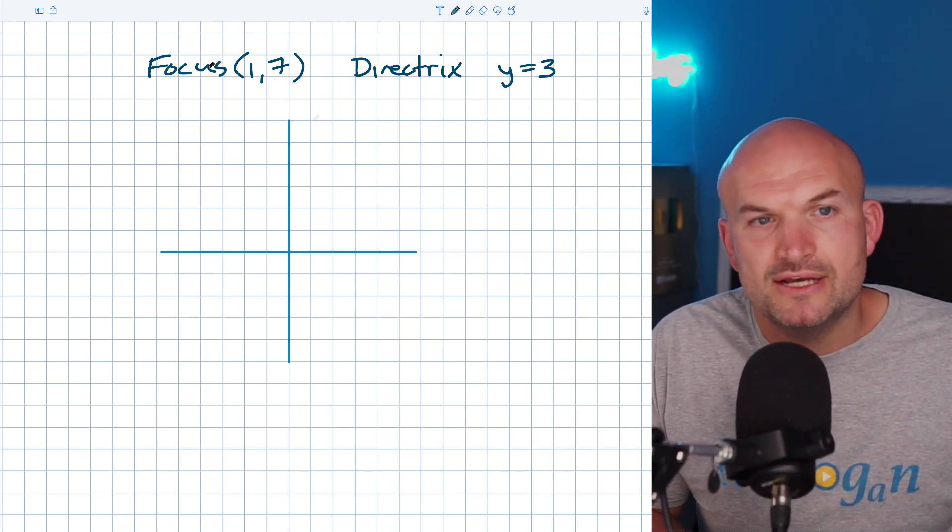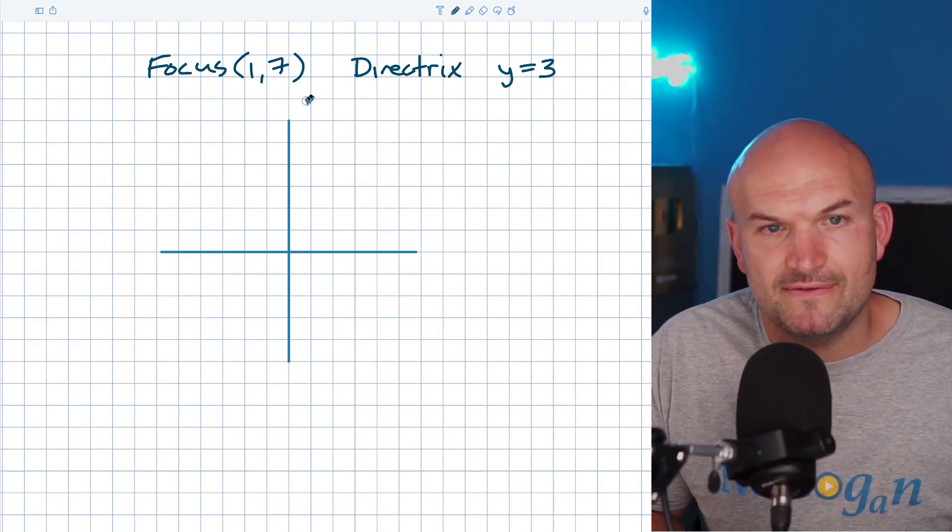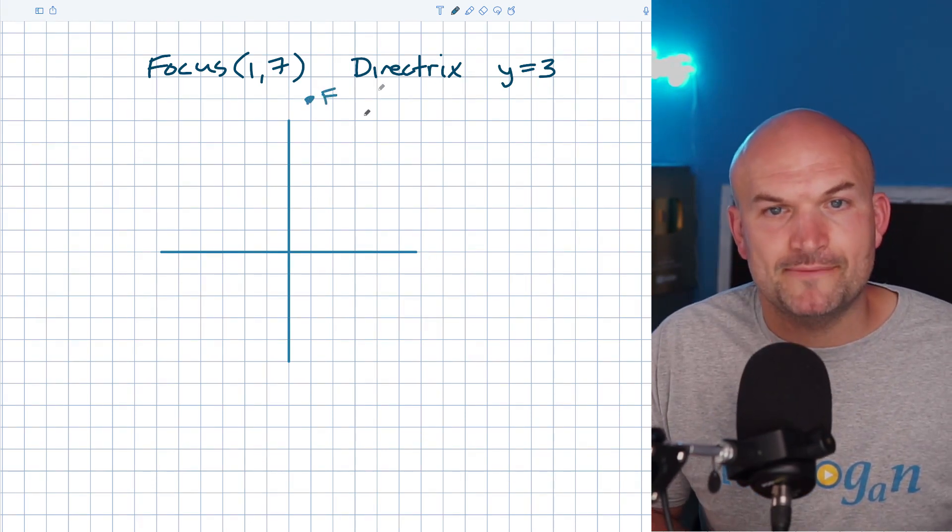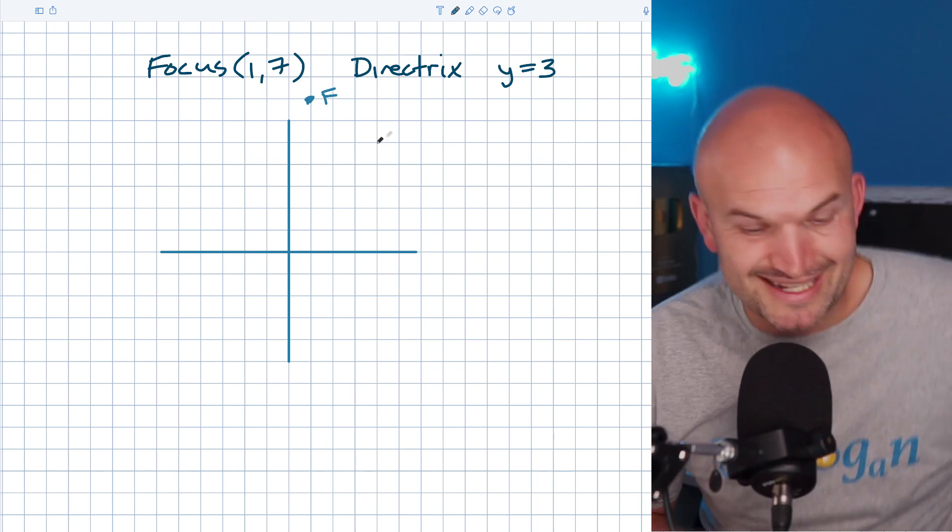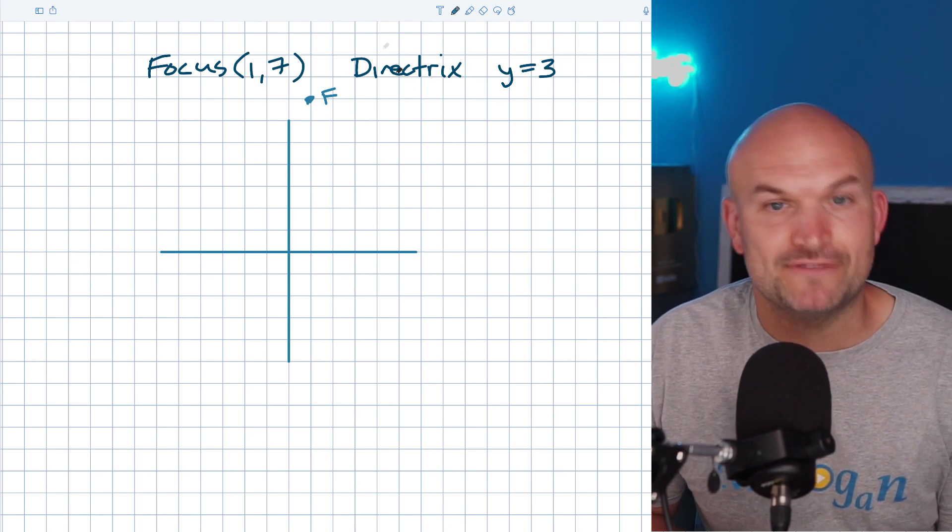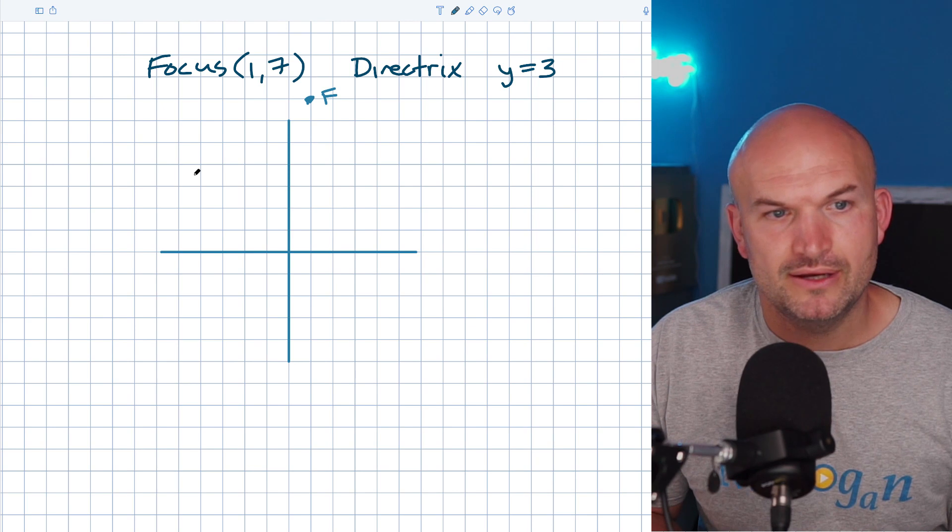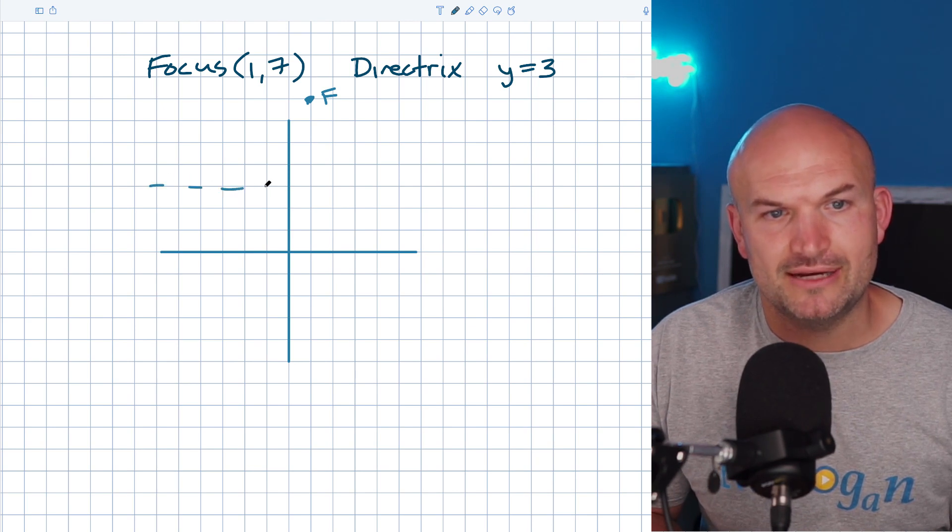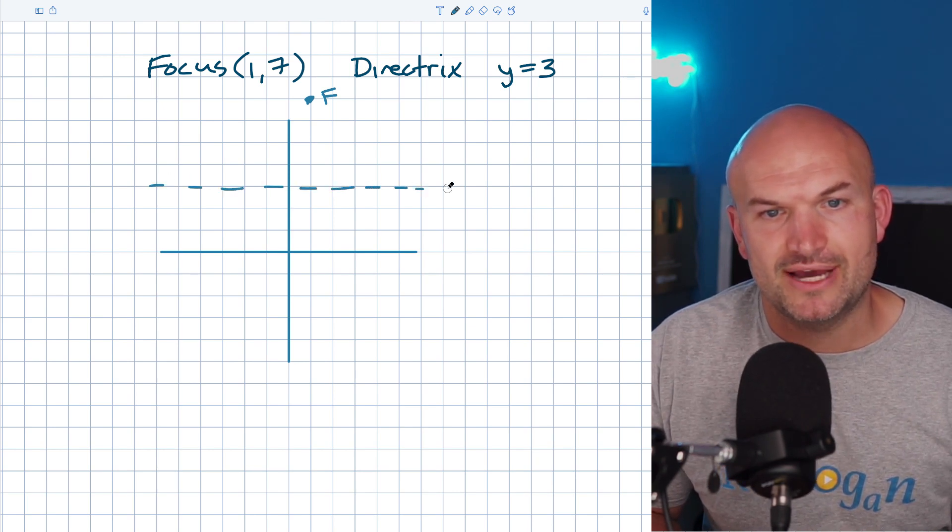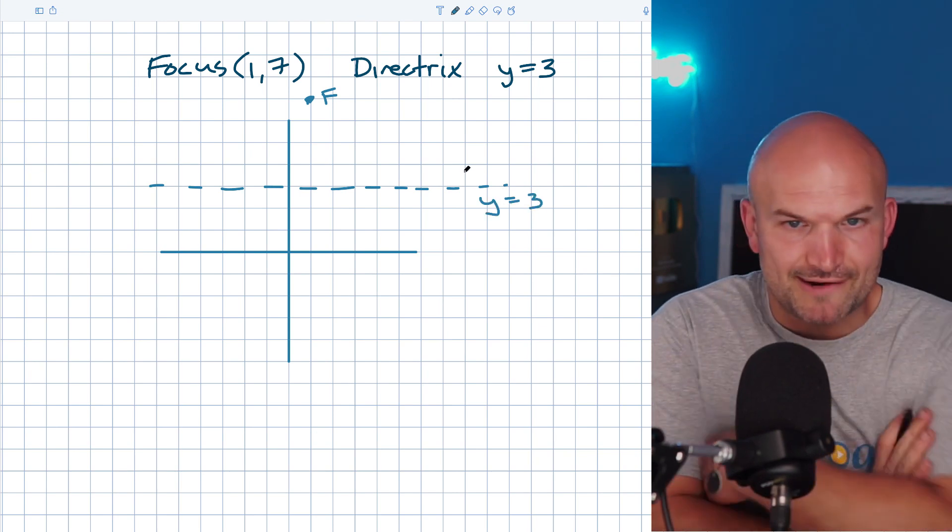We have (1,7), so one, two, three, four, five, six, seven - I'm going to put an F here. Now the directrix is not a point, the directrix is a line. I'm going to graph this directrix. I have y = 3, so I'm going to go up to three and draw a dashed line. That is your directrix y = 3.